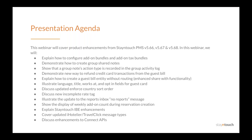Today's presentation will cover how you can get the most out of the version 5.66, 5.67, and 5.68 product releases. In this webinar, we will explain how to configure add-on bundles and add-on tax bundles, demonstrate how to create group shared notes, show that a group notes action type is recorded in the group activity log, demonstrate the new way to refund guest card transactions from the guest bill, explain how to create a guest bill entity without routing, the enhanced share width functionality, illustrate language, title, works at, and opt-in fields for the guest card, discuss updated enforced country sort order, discuss the new incomplete rate tag, illustrate the update to the reports inbox no reports message, show the display of weekly add-on count during reservation creation, explain Stay in Touch IBE enhancements, cover updated iHotelier and TravelClick message types, and finally discuss enhancements to connect APIs.